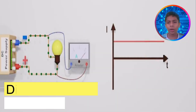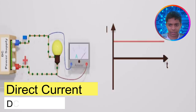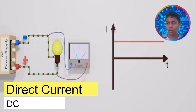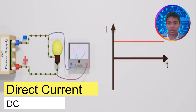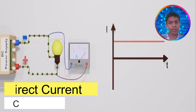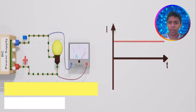When we talk about the direct current, we can say direct current is the current which doesn't change its voltage with time. Electronic sources like batteries provide direct current, and what we get to our homes is alternating current.